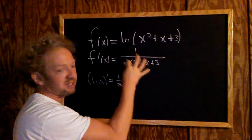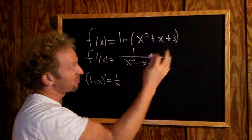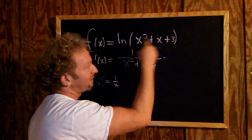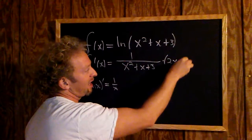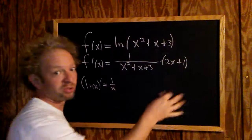Then multiply by the derivative of the inside. So the inside is this piece, and the derivative is, well, the derivative of x squared is 2x. The derivative of x is 1, and the derivative of 3 is 0. So that's the chain rule.